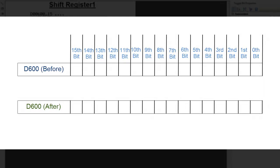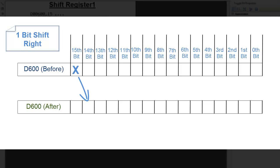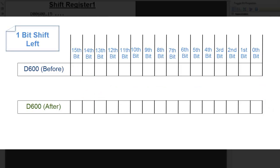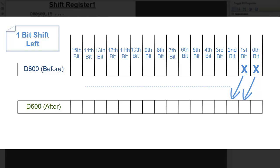When the one bit shift right instruction is executed with the push of a button, the far left bit shifts one bit to the right, and each next bit shifts to the right as well, until the least significant bit. When the one bit shift left instruction is executed, the far right bit shifts one bit to the left and each next bit shifts to the left until the most significant bit.